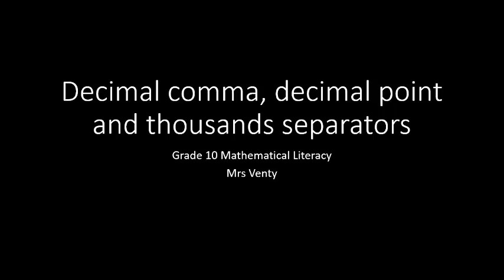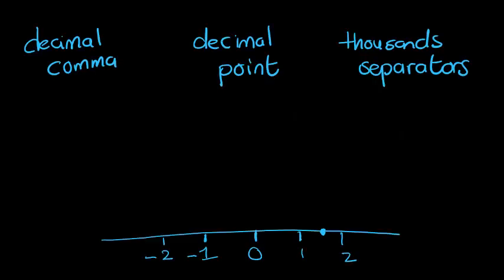Our first lesson under this heading is decimal comma, decimal point and thousands separator. A decimal number is a number that has got two parts. It has a whole number and it has a fraction. If we look at the number line drawn here, this dot is approximately one and a half, one whole and halfway between one and two. If we write it as a fraction, we would write it as one and a half.